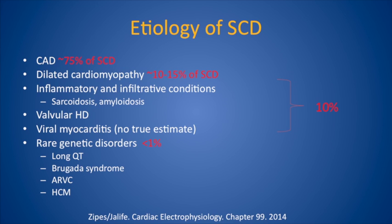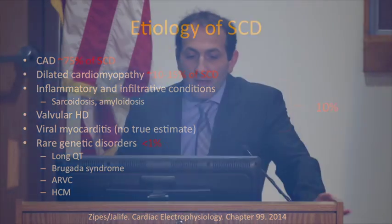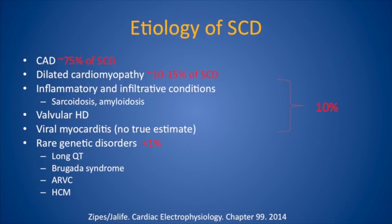Inflammatory and infiltrative conditions such as sarcoidosis, amyloidosis, valvular heart disease, and viral myocarditis — there's no true estimate for viral myocarditis, but they believe some younger patients who die suddenly may have had undetected viral myocarditis. Altogether, these contribute to about 10% of sudden cardiac death. The rare genetic disorders — long QT, Brugada, and others combined — account for less than 1% of sudden cardiac death.